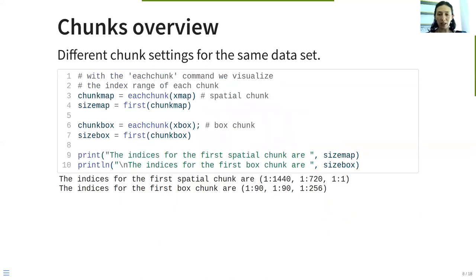After getting familiar with our datasets, we are having now the chunks overview. For this, we are going to load the chunk indices from both input files. We use the each chunk command from the DiskArrays library to load these indices. Later, we use the first chunk to assess the indices of both the spatial and the box chunking.